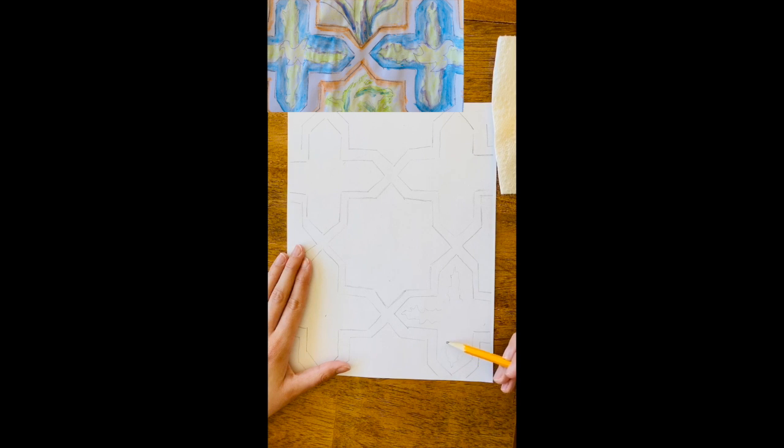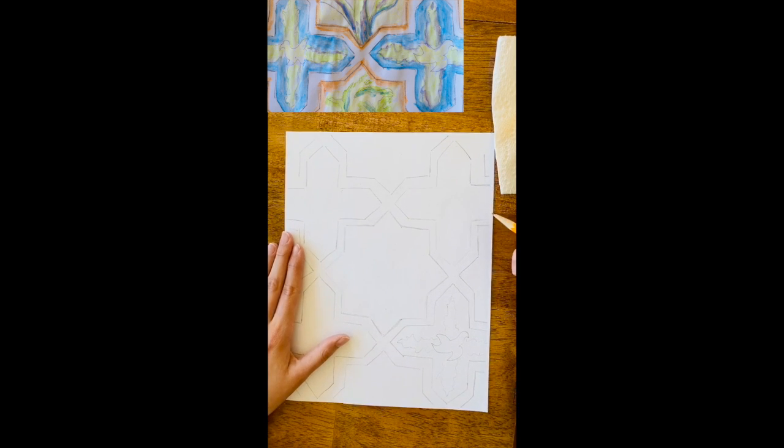I'm going inside of these kind of T-shaped sections and I'm going to have some greenery, and then I'm drawing out a little bird in the center. So if you want to do some greenery and then maybe a different animal in the center, that would be really cool. You're going to do that in every T-shape area.